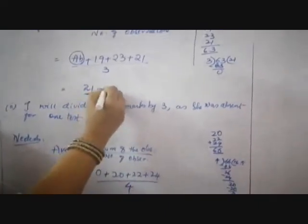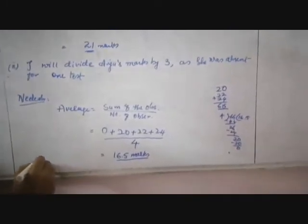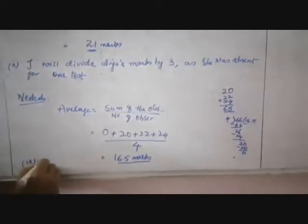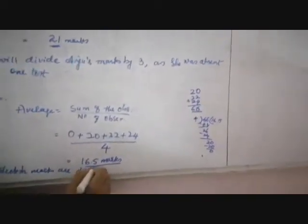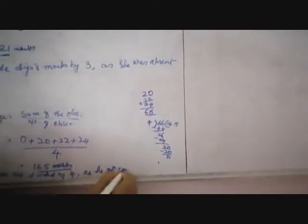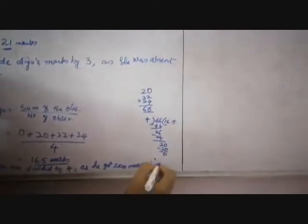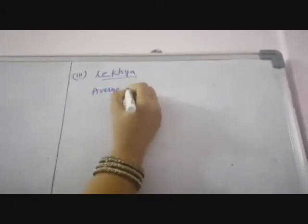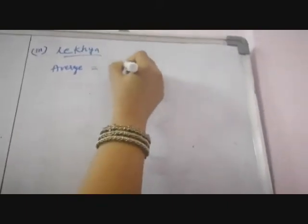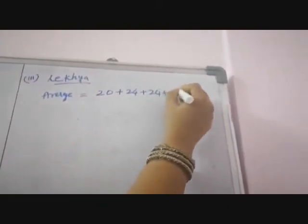And now you have to write the statement children. I will divide Nilesh's marks by 4, not by 3. Average is equal to sum of the observations by number of observations — write the formula. Then I am doing the addition directly divided by 4.